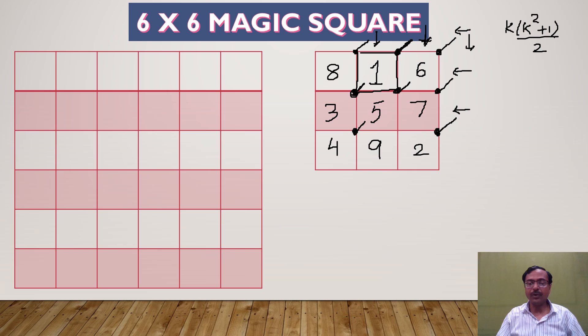As suggested by the formula k times k square plus 1 by 2, the sum of all numbers along the rows - 8 plus 1 plus 6, then 3 plus 5 plus 7, 4 plus 9 plus 2; in the columns - 4 plus 3 plus 8, 9 plus 5 plus 1, 2 plus 7 plus 6; and the diagonals - 2 plus 5 plus 8 and 4 plus 5 plus 6 - all give you the same sum of 15. This is how you make a 3 by 3 matrix.